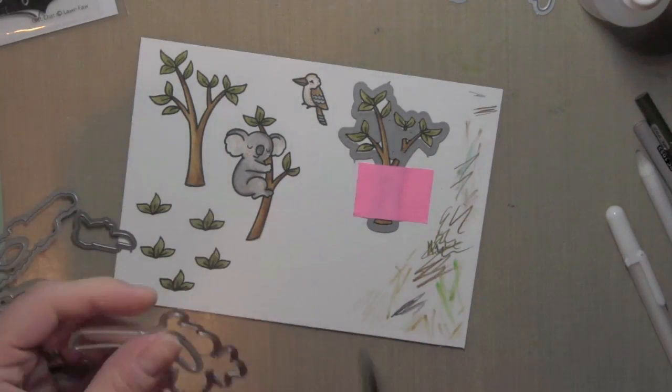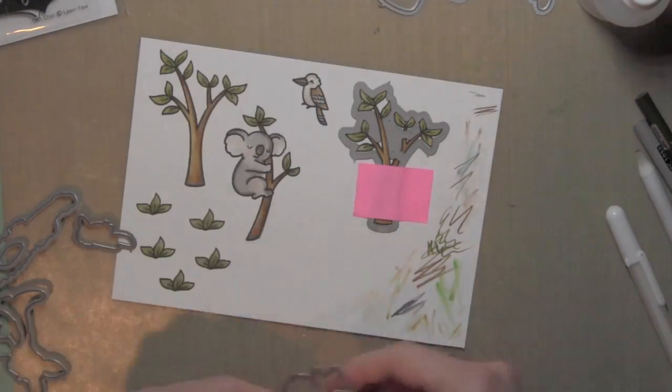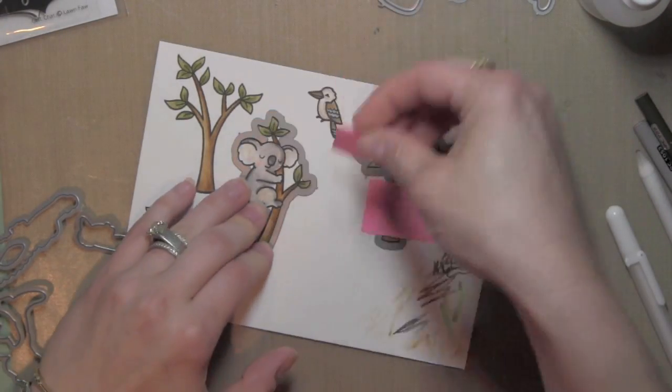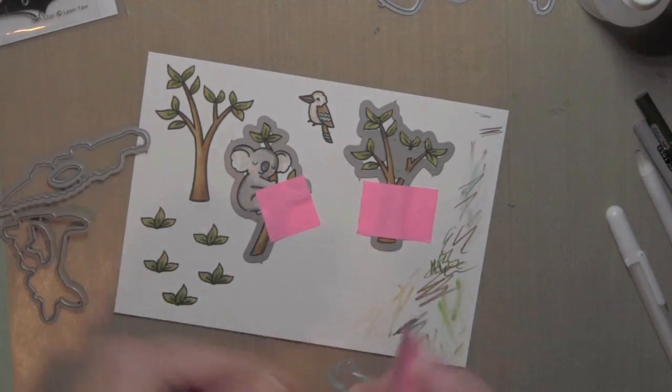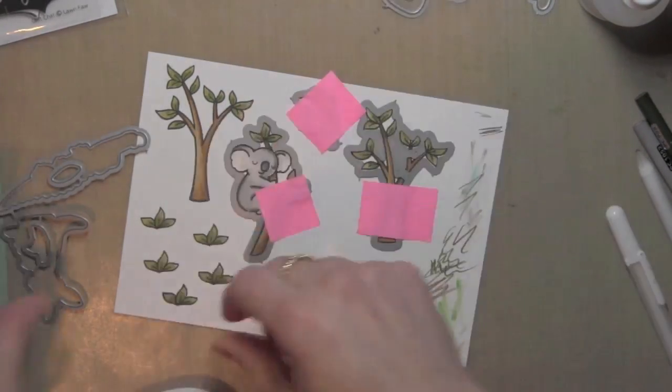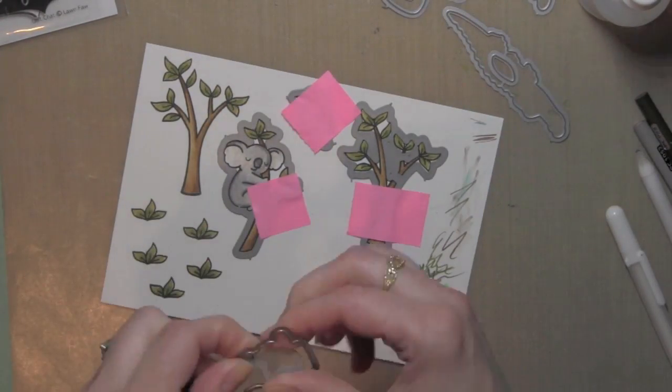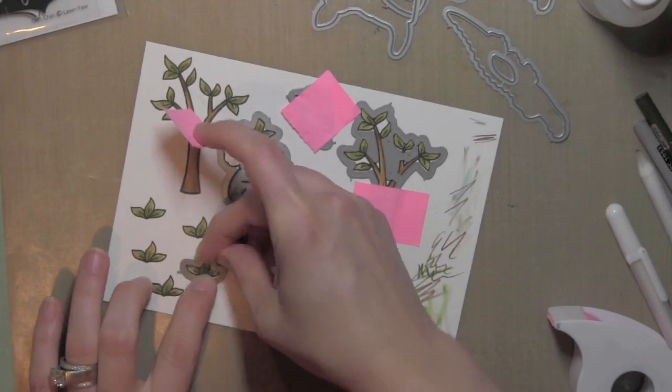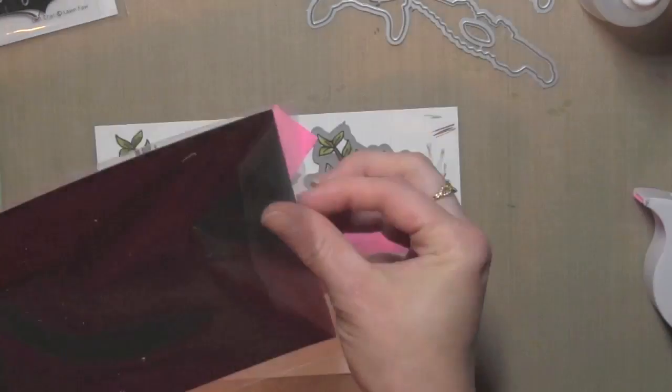Now these are the coordinating dies, these are brand new for June 2014. I love that Lawn Fawn is coming out with dies that coordinate with past and older Lawn Fawn stamp sets. There were actually four released this month for older stamp sets and this is one of them.